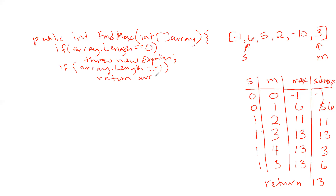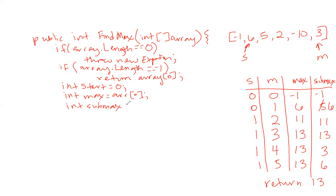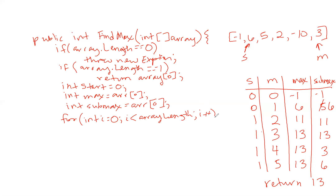We need to initialize some variables: start at zero, max set to the first element of the array, and sub max also set to the first element. We can use i as our mid in the for loop. So: for int i equals zero, i is less than array dot length, i plus plus.